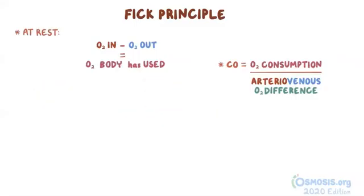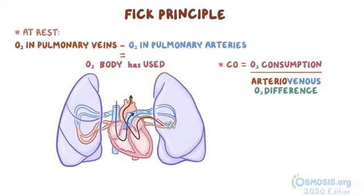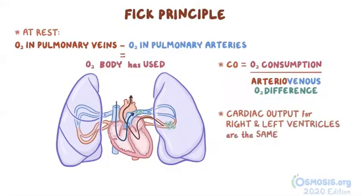The Fick Principle states that at rest, the oxygen in the pulmonary veins going to the body — full of oxygen — minus the oxygen left in the pulmonary arteries coming back from the body, after the body has used some, must equal how much oxygen the body has used. The Fick Principle also makes the assumption that at rest, the cardiac output for the right and left ventricles are the same.